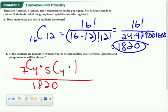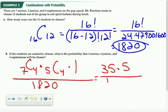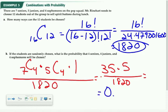Using the combination function on my calculator: 7C4 is 35 and 5C4 is 5. Multiplying those together gives 175, and dividing by 1,820 gives a probability of approximately 0.096.